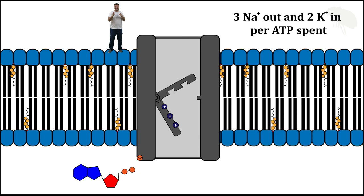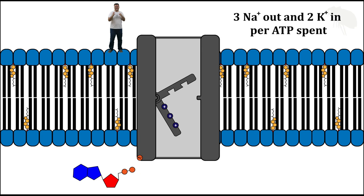The ratio matters, the direction matters, and at the end of the day this is a great straightforward example of primary active transport: the sodium-potassium exchange pump.